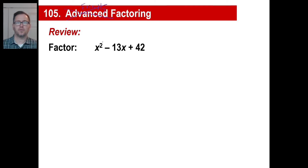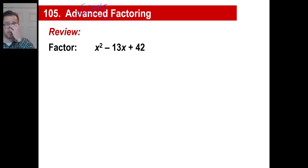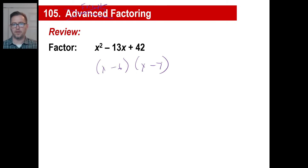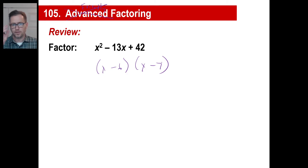Remember those trinomials? What's the answer to this thing? You need two numbers that add up to negative 13 and the same two numbers multiply to give you positive 42. If two numbers add to a negative and multiply to a positive, they have to be two negative numbers. So the factors are x minus 6 and x minus 7. That's the method.